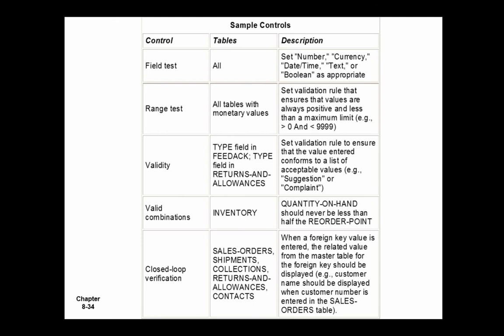Closed-loop verification is very important. The concept says: a user types in item number 123 thinking they want to buy that item. The system displays back 'widget' — because it knows what 123 is. That way, if you actually wanted to buy a doodad with item number 124, you'd see you're getting a widget and correct it to 124. So closed-loop verification says: when you enter generic information like a number, bring back information that allows the end user to confirm they entered the right thing.